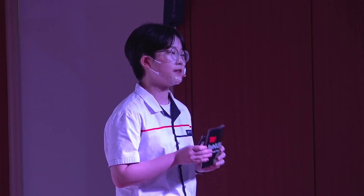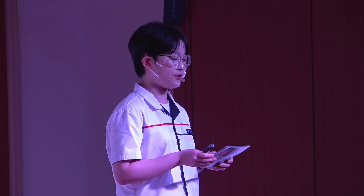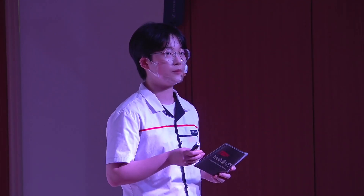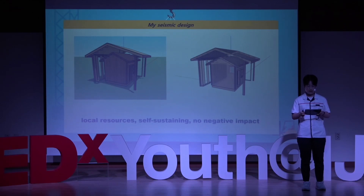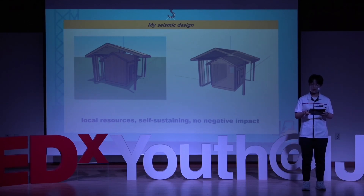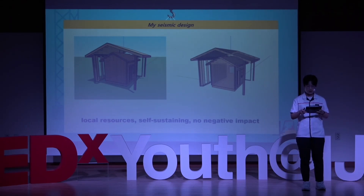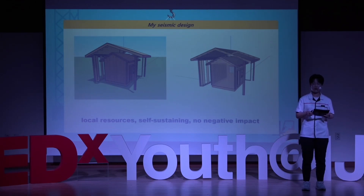My earthquake-resistant design requires only trees to be embedded in the ground, so houses can be built easily in the countryside. My technology uses local people and local resources, is self-sustainable, and has no negative impact on the environment. When you build a house, you simply add the surrounding wooden pillars and don't need unnecessary outside personnel or experts. Also, even if the system is destroyed after a long time, you only need to replace the new pillar. Finally, it is more eco-friendly than steel-based seismic design, which emits a lot of carbon dioxide, and wooden pillars are biodegradable and do not affect the environment.